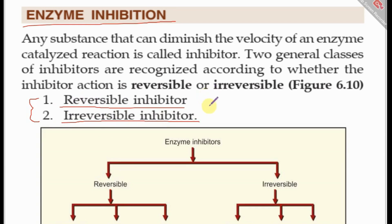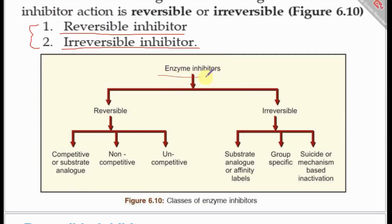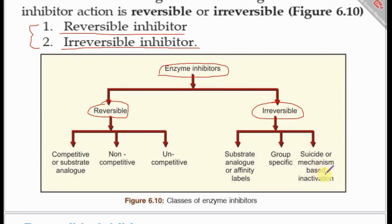Here is a flow chart showing the subtypes of enzyme inhibitors. We have two major types: reversible inhibitors and irreversible inhibitors. The reversible inhibitors have subtypes: competitive or substrate analog, non-competitive, and uncompetitive inhibitors. In the case of irreversible inhibitors, we have substrate analog or affinity labels, group-specific inhibitors, and suicide or mechanism-based inactivators.